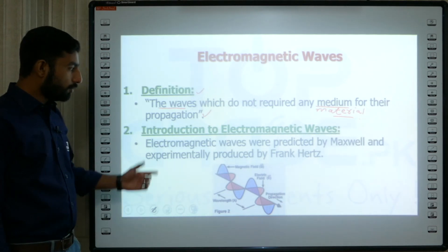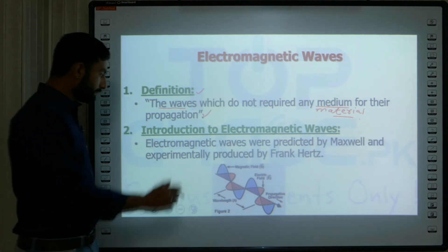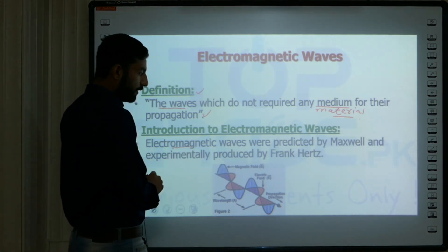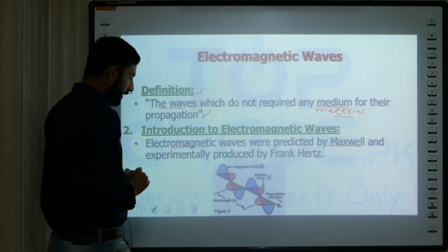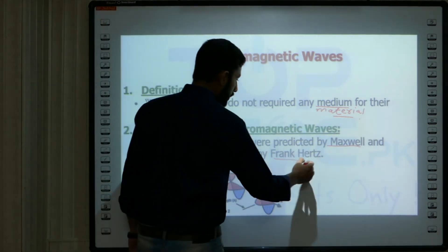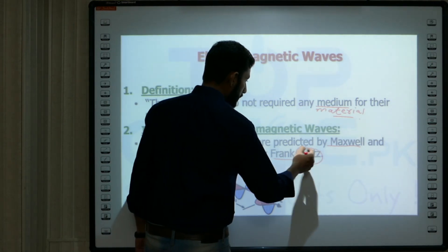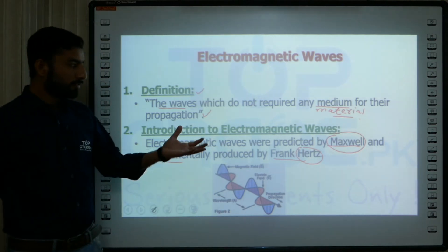Electromagnetic waves were introduced by scientists who worked on this field. Electromagnetic waves were predicted by Maxwell and experimentally produced by Frank Hertz. These are two scientists who have contributed to electromagnetic waves at the start of the 19th century.